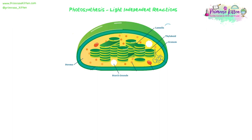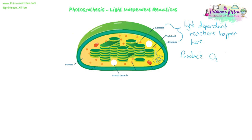We're going to start looking at the light independent reaction. Let's have a quick recap of what we've already talked about. The light dependent reactions happen in the lamellae, the thylakoids, the grana - the folded membranes. That's where the light dependent reactions happen because that's where light is being absorbed by the photosynthetic pigments. From those light dependent reactions we made oxygen, which diffuses out of the chloroplast and potentially out of the leaf. We also made some ATP and some reduced NADP. These two are what we need - they move into the stroma, and the stroma is where the light independent reactions take place.